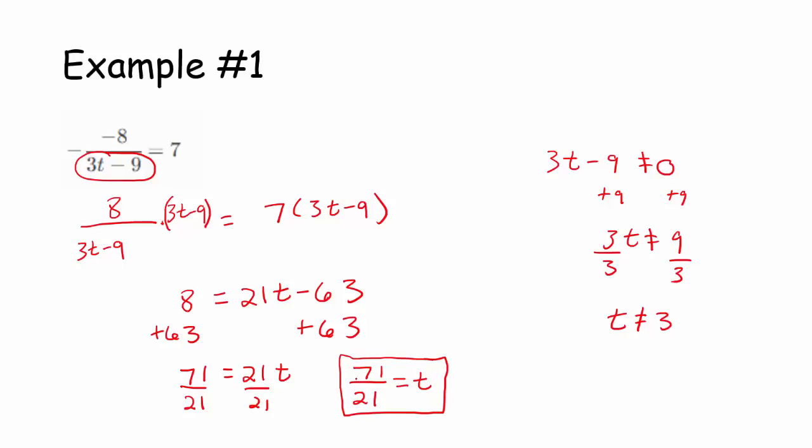This 71 over 21 is a solution, is great. It works, it solves the equation. You just always want to make sure that you look at your denominator and think, what values of your variable would make the denominator 0? Those values can definitely not be solutions to the equation.